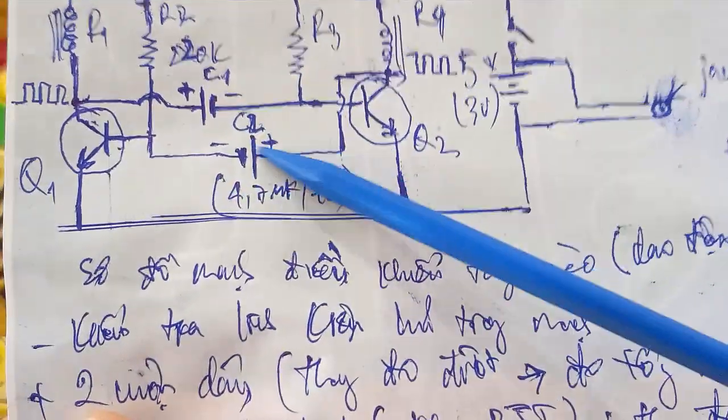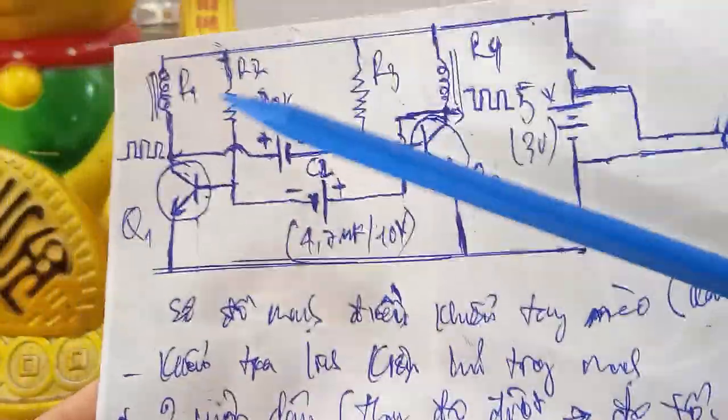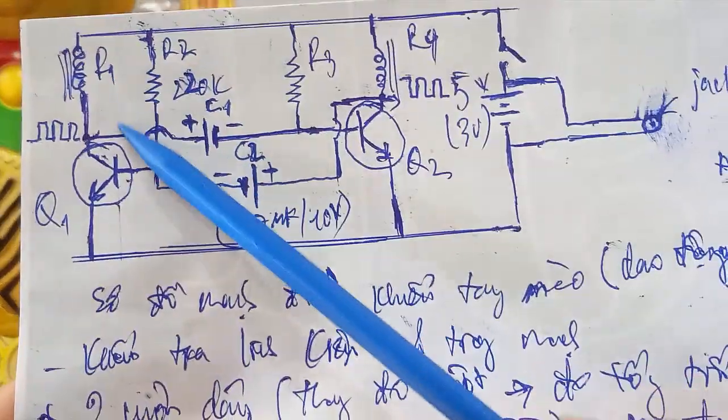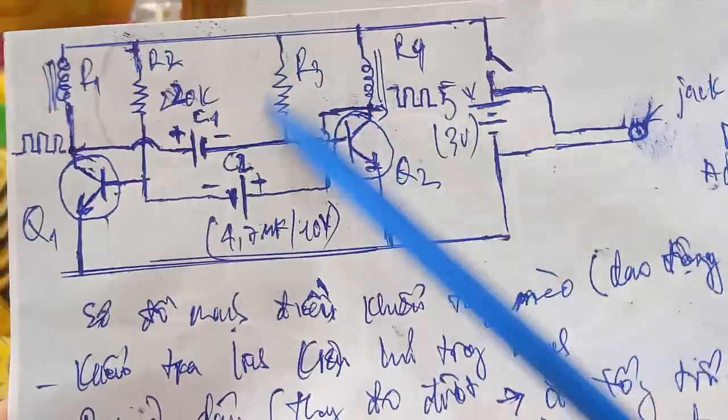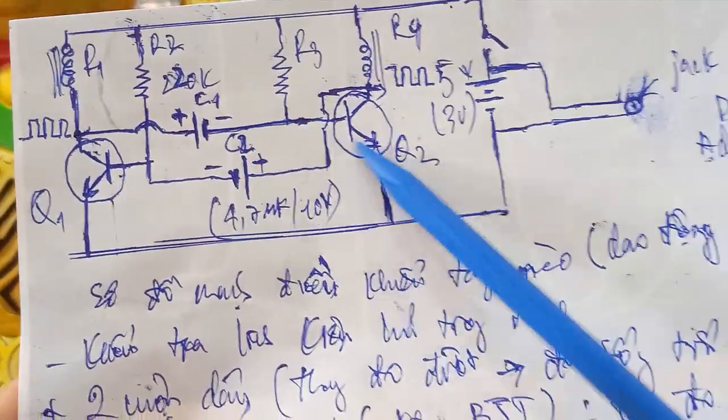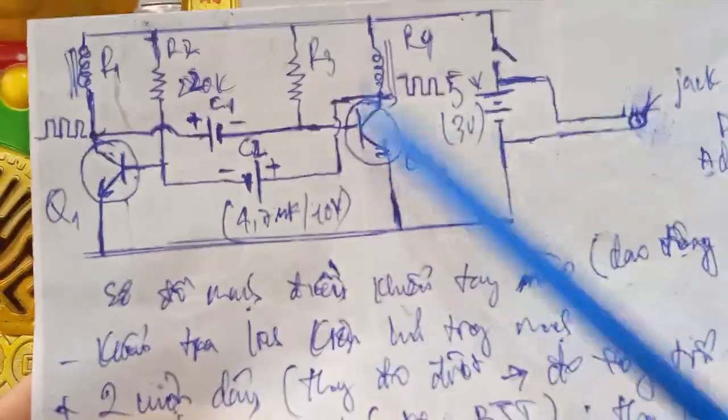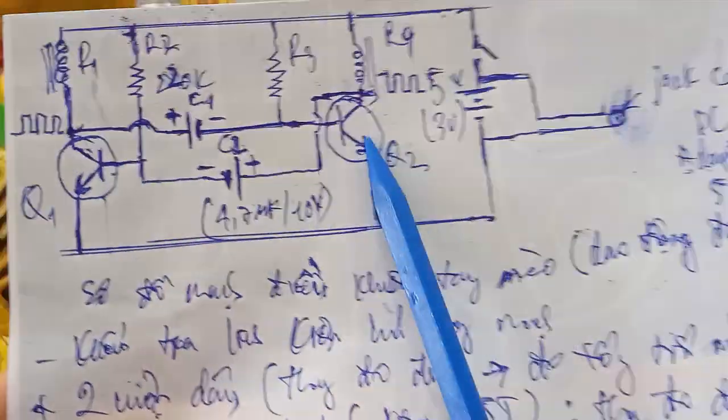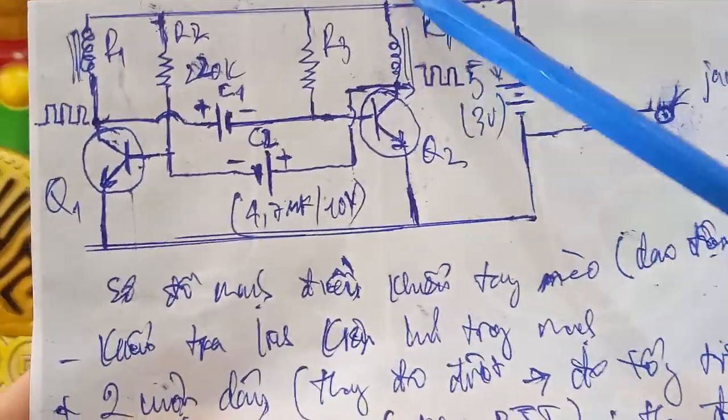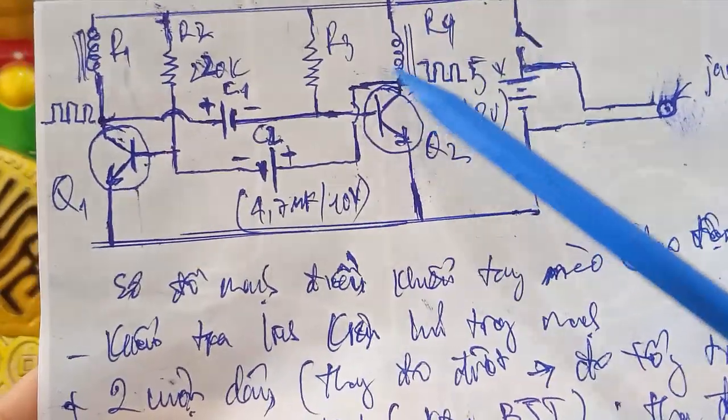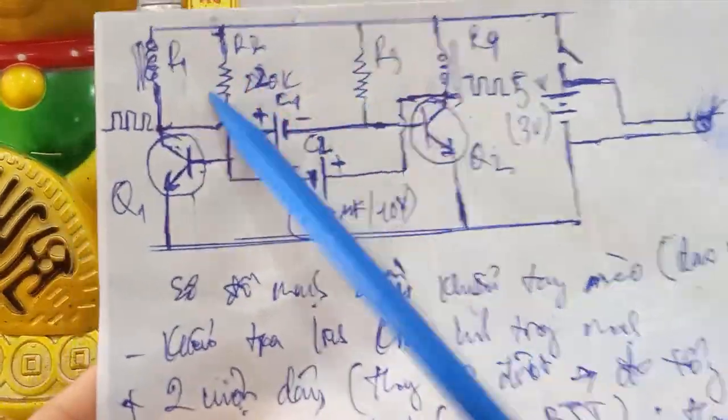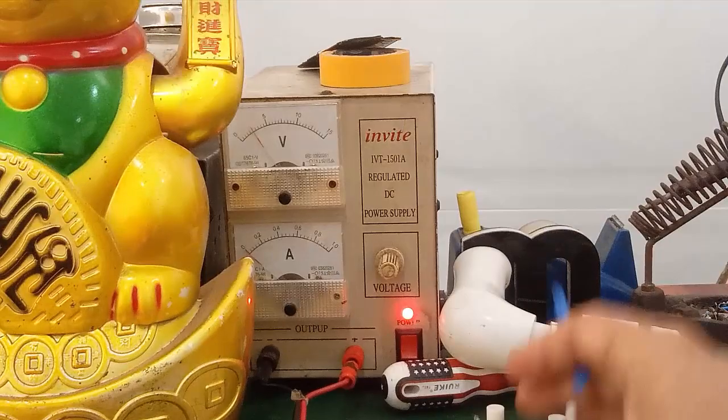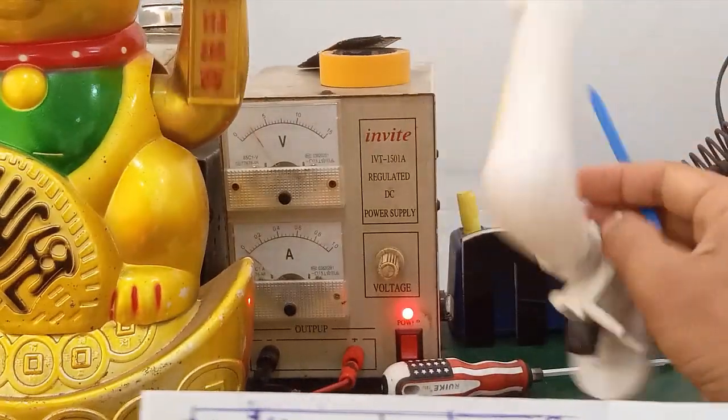Quá trình tiếp theo. C2 nó xả hết điện. Thì cái chân BE này ở mức cao. Thì Q1 nó sẽ dẫn lại. Khi mà Q1 dẫn, thì cái dòng điện của tụ C1 nó sẽ xả qua R3. Nó tạo thành điện áp âm của Q2. Nó làm cho Q2 ngưng dẫn. Thì lúc này quá trình là Q1 dẫn Q2 ngưng dẫn. Đó. Cái chương trình nó tiếp theo. Tiếp theo. Cứ Q1 dẫn thì Q2 ngưng. Mà Q2 ngưng thì Q1 dẫn. Nó tạo thành cái dòng điện. Nó liên chuyển qua cái 2 cuộn dây. Qua cuộn dây 1 qua cuộn dây 2. Từ đó nó sẽ làm phát sinh cái dòng điện chạy qua cuộn dây và sinh ra từ trường. Làm cho cái tay mèo nó hít, nó đẩy. Là cái tay mèo của mình nó chuyển động.